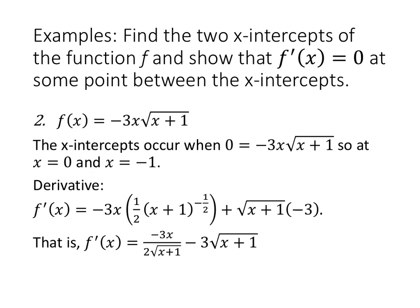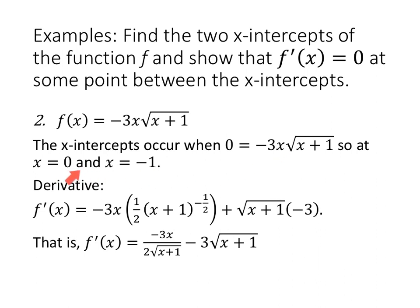Now let's do it again. If F of X equals negative three X times the square root of (X plus one), the x-intercepts occur when the y-value is zero. The first factor, negative three X equals zero, gives X equals zero. The second factor, the square root of (X plus one) equals zero, gives X equals negative one. So the x-intercepts are negative one and zero.